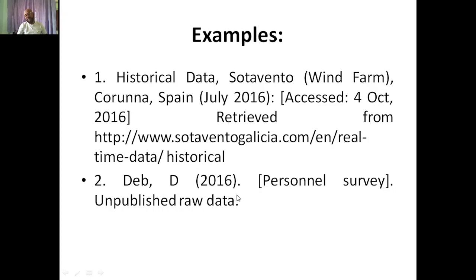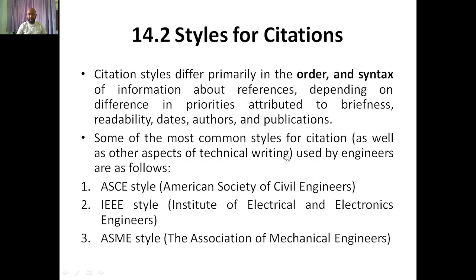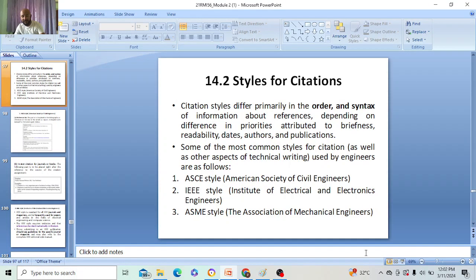Another example: a personal survey done by Dab in 2016 — that was unpublished raw material, but permission was taken from him by the journals or publishers. That is what comes under citing datasets. Next, we will discuss styles of citation in the next class, as that is a different topic.